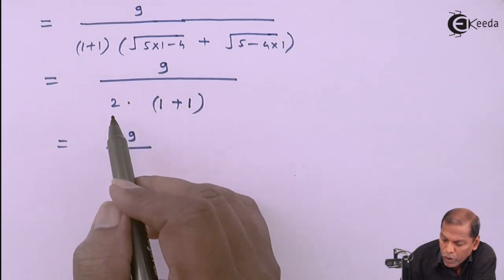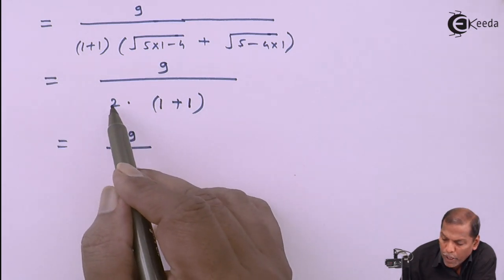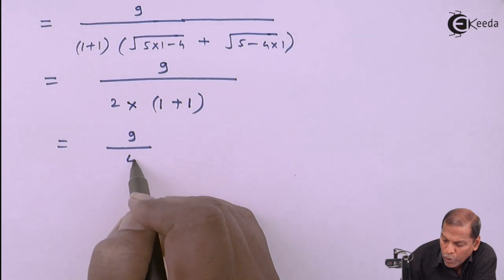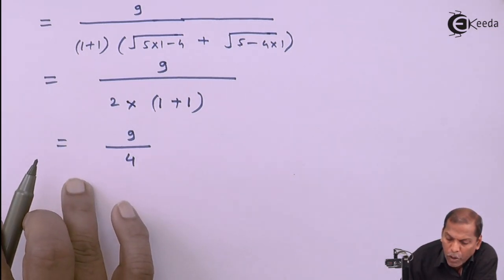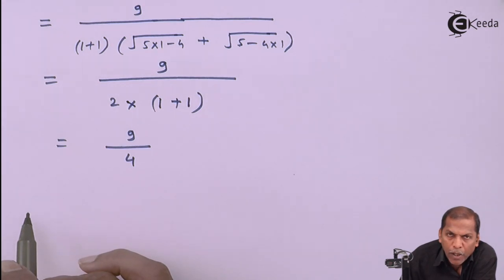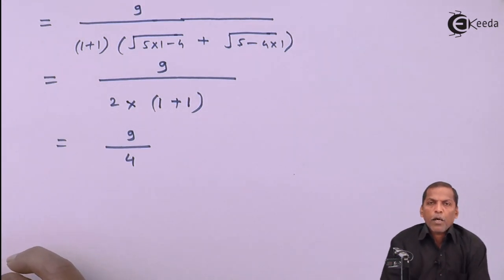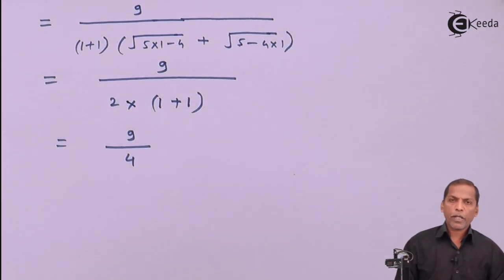So finally, 9 upon: now 1 plus 1 is 2, and 2 multiplied by 2 gives 4 in the denominator. So in this way we get the answer as 9 upon 4. This is the required solution for the given problem. Thank you.